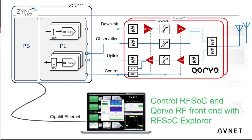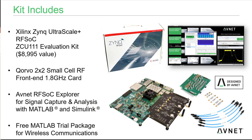This combination allows prototyping over-the-air transmissions using the Quovo 1800MHz RF data card. The kit includes the Xilinx Zynq UltraScale+ RF SOC ZCU111 development board, the XM500 Balun board, the Quovo 1800MHz RF data card, a multi-band LTE stub antenna, the Avnet RF SOC Explorer which works with MATLAB and Simulink, and a free MATLAB trial package for wireless communications.